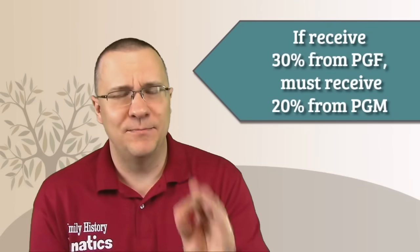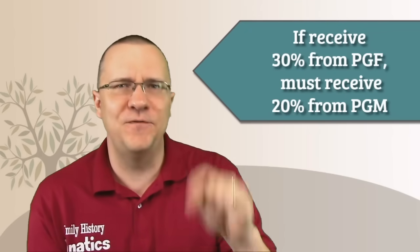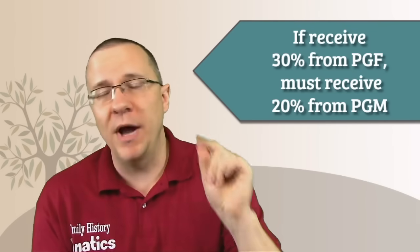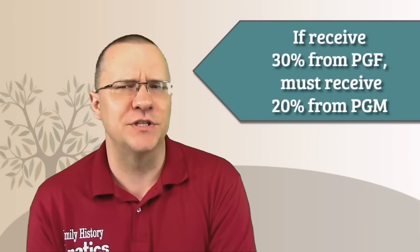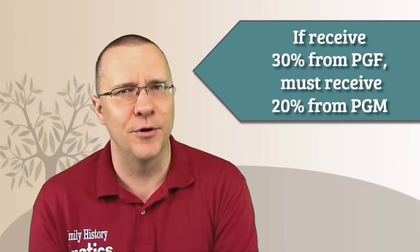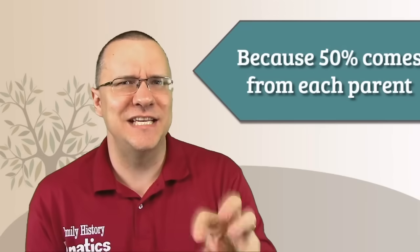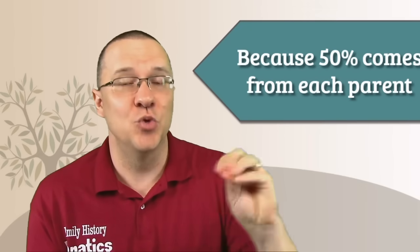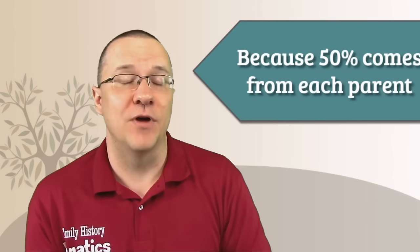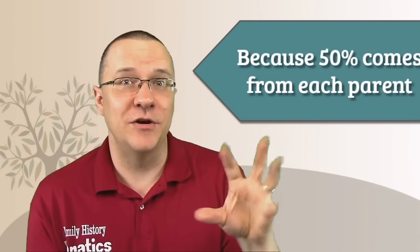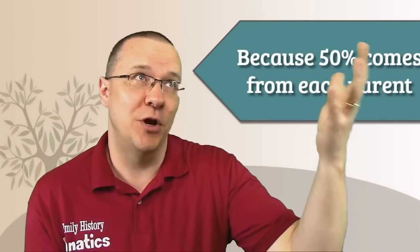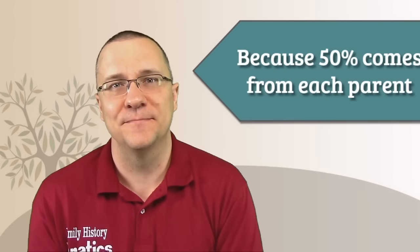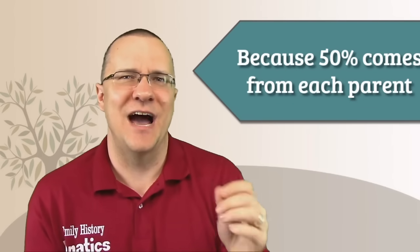The last important thing to remember is that if you receive 30% from your paternal grandfather, you must receive 20% from your paternal grandmother. Why is that? Because their DNA is what makes up your father's DNA, and you receive 50% of your DNA from your father. So their DNA has to add up to 50%. So 30%, you get 20%. If you have 25%, you're going to get 25%. That is how it works.